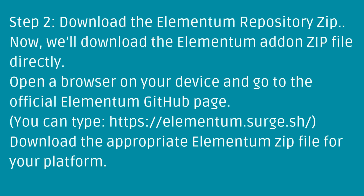Step 2: Download the Elementum repository zip. Now we'll download the Elementum add-on zip file directly. Open a browser on your device and go to the official Elementum GitHub page. Download the appropriate Elementum zip file for your platform.